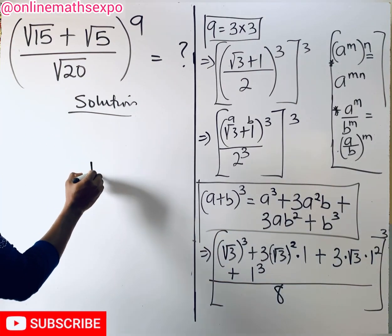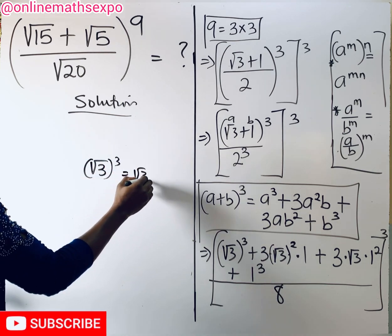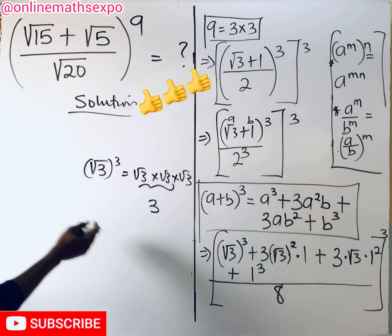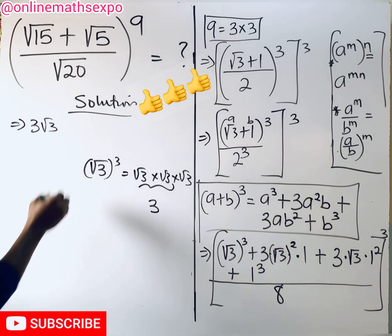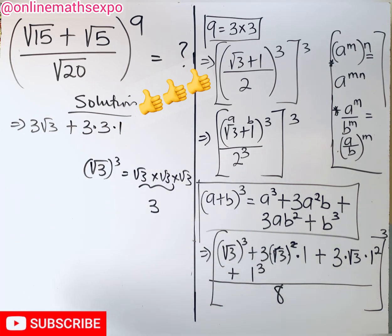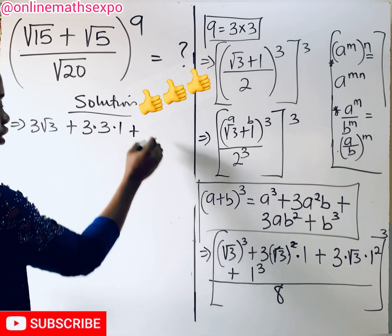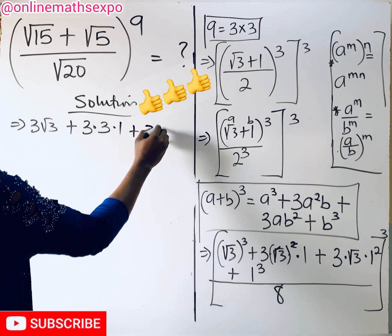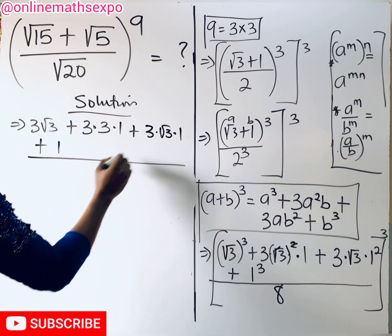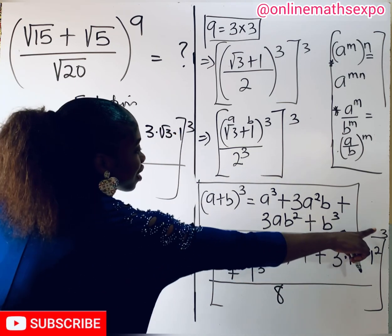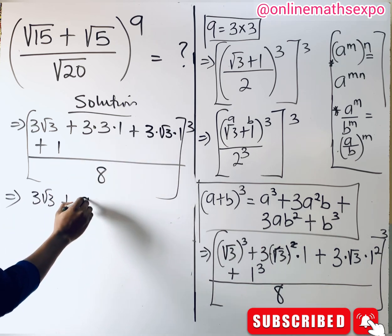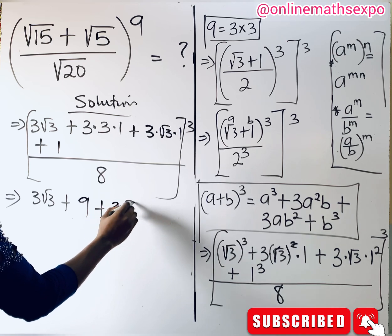Simplifying: (√3)^3 = 3√3. For 3·(√3)²·1: (√3)² = 3, so this gives 3 × 3 × 1 = 9. For 3·√3·1: this gives 3√3. And 1^3 = 1. So the numerator is 3√3 + 9 + 3√3 + 1, divided by 8.